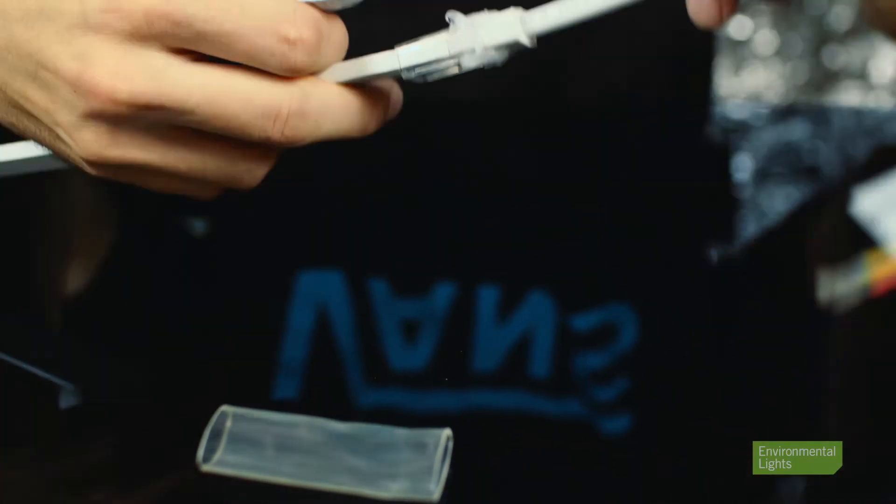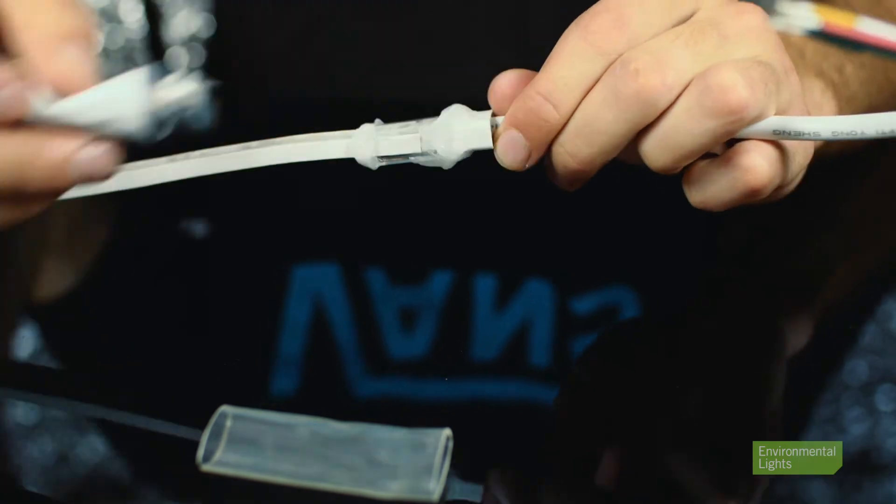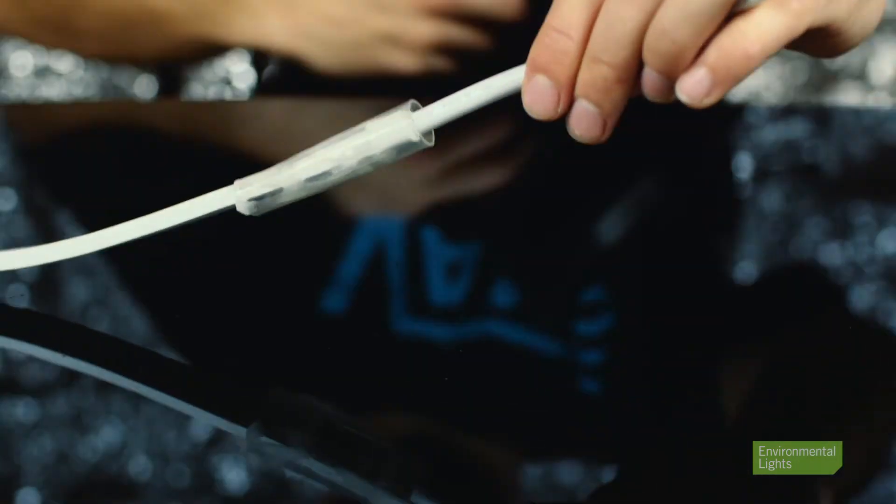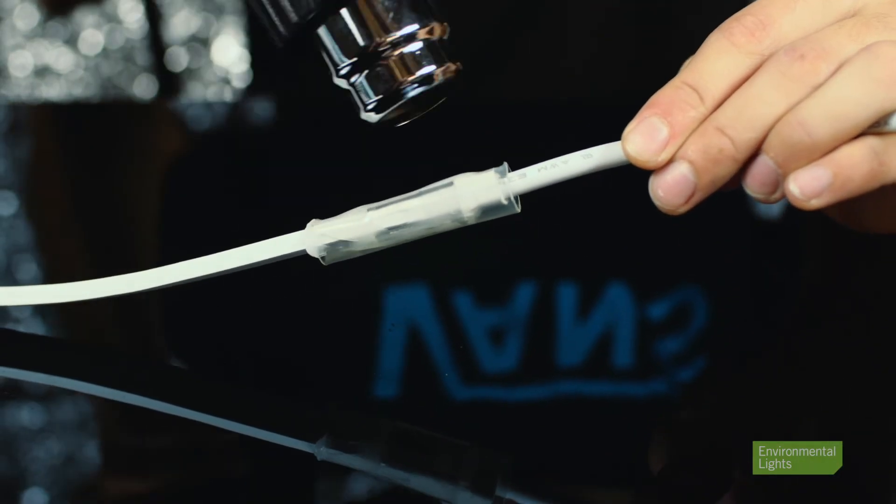Next, use the sealant to coat the edges of the cover. You can now slide the heat shrink tube over everything and apply heat using the heat shrink gun to seal everything in place.